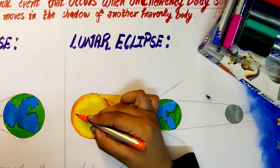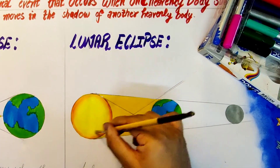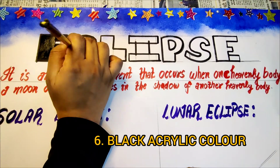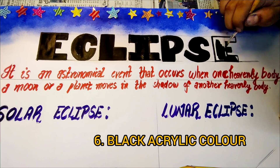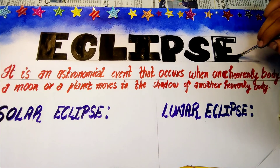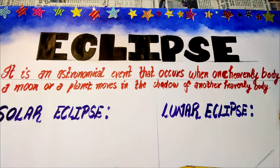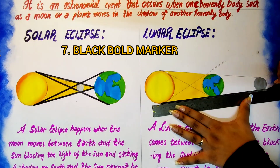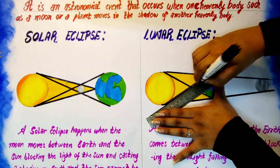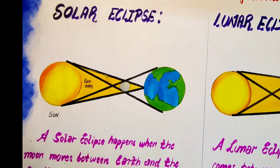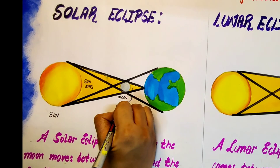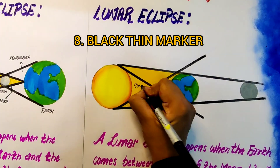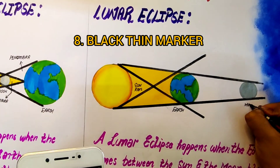Now we'll be repeating the same process with the lunar eclipse also, as you can see in the video. For the main heading I'll be painting it with black acrylic color. Now to trace the definition of solar and lunar eclipse I have used pink color brush pen, and for the rays I have used black color bold marker.